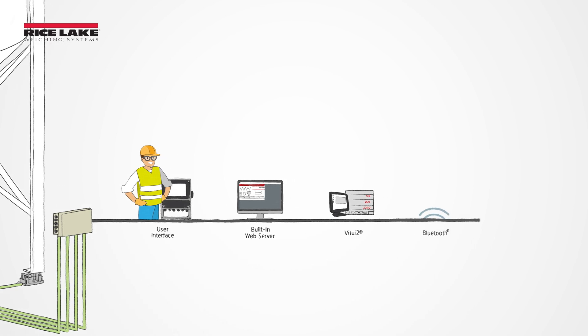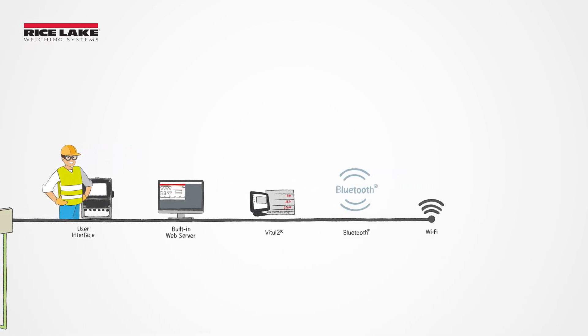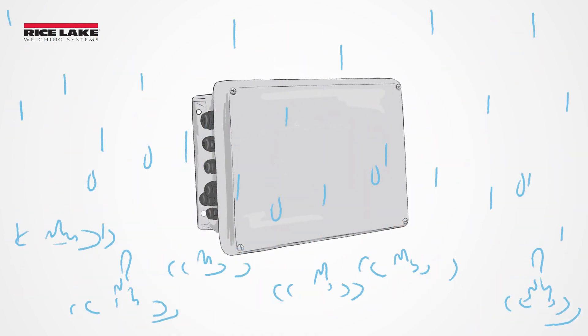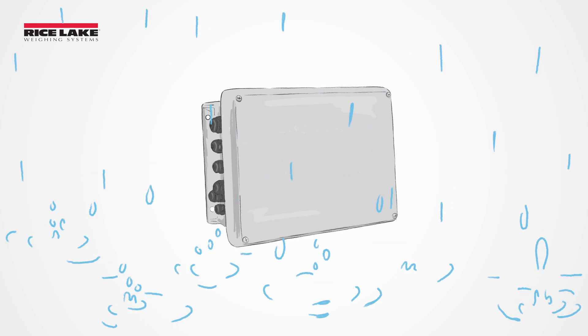A junction box can have multiple terminals depending on the number of connections you need to make. The junction box can provide protection against the intrusion of foreign bodies, dust, and moisture.